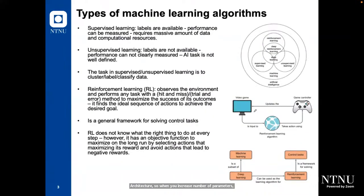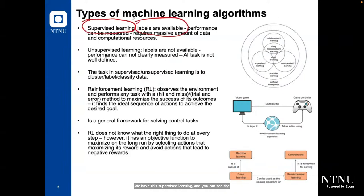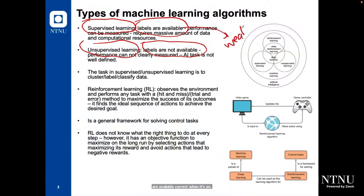Types of machine learning: we have supervised learning, where labels are available. When it's unsupervised learning, we don't have any labels. When it's supervised, it will be weak AI; when it's unsupervised, it's strong AI.